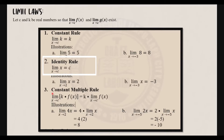Next, we have the identity rule. The identity rule states that the limit of x as x approaches c is equal to c. For example, find the limit of x as x approaches 2 — that would be equal to 2. Next, find the limit of x as x approaches negative 3 — that would be negative 3.